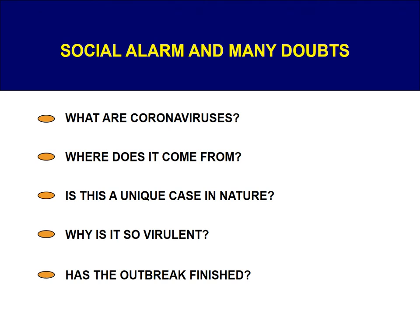As you can imagine, during this time there was high social alarm and many doubts. Nobody knew what coronaviruses were, apart from those of us working on them. So people were asking us: where does it come from? Is this a unique case in nature? Why is it so virulent? Has the outbreak finished? You have to remember I gave this talk in July 2003, and we still had some cases of SARS ongoing.